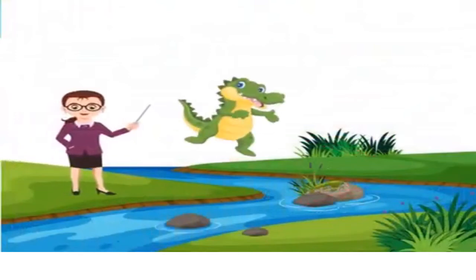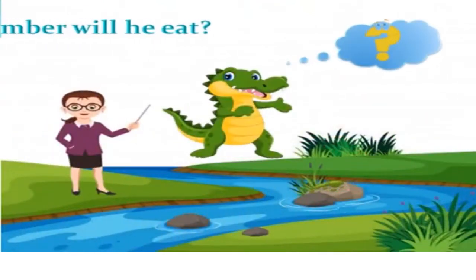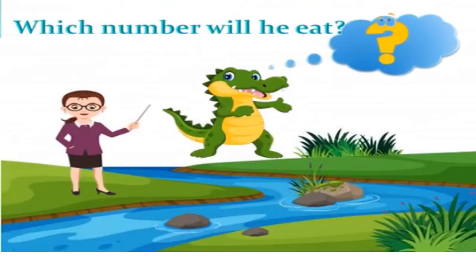Now, children, it's your turn to guess which number will Charlie eat. Number five or nine? Yes! You are right! He will eat the number nine because that is the greater number.